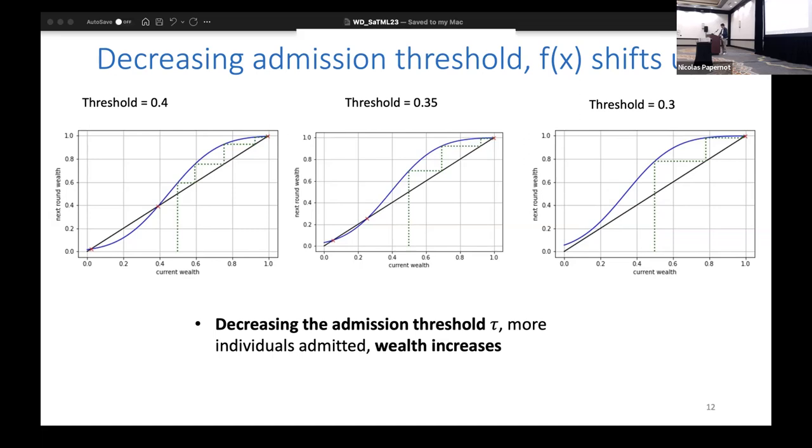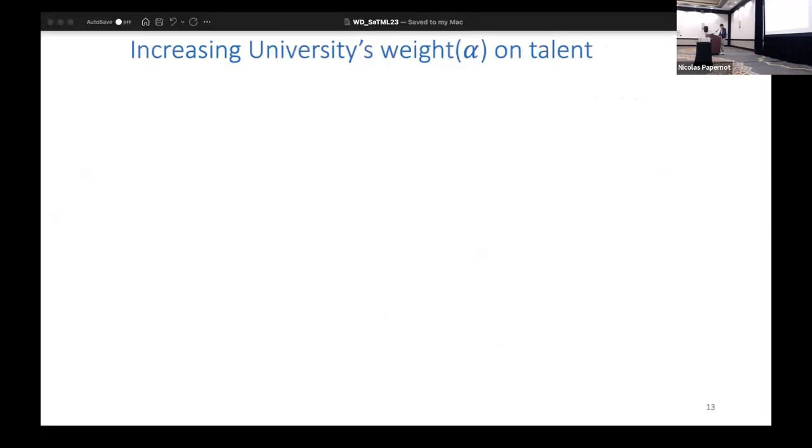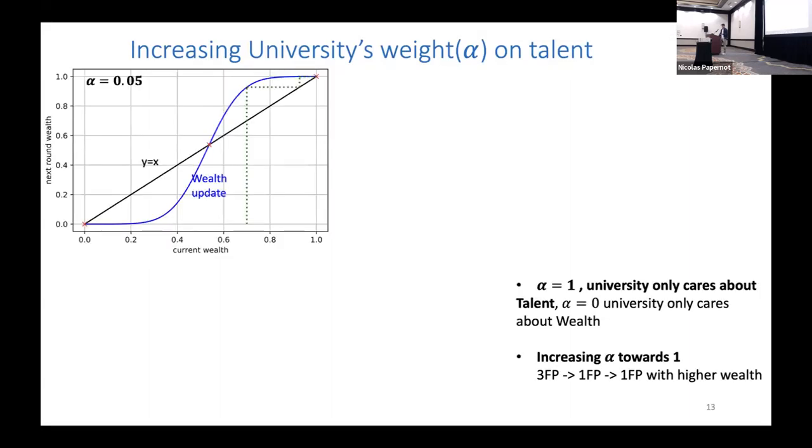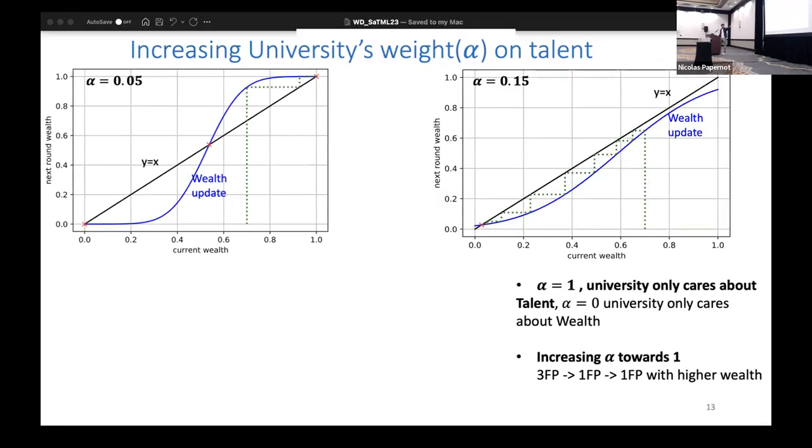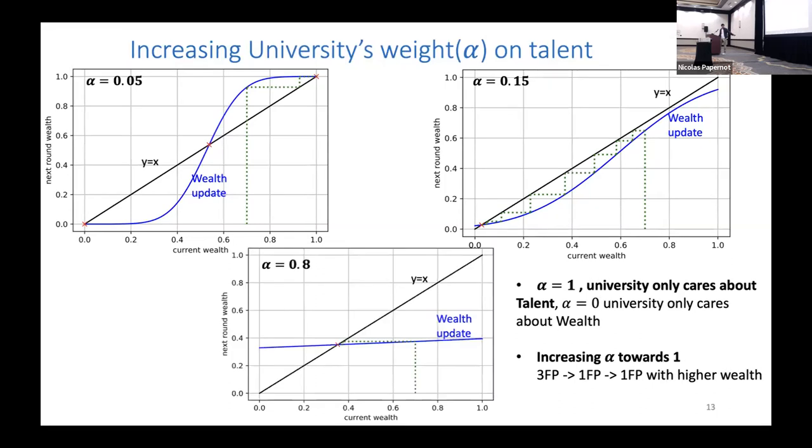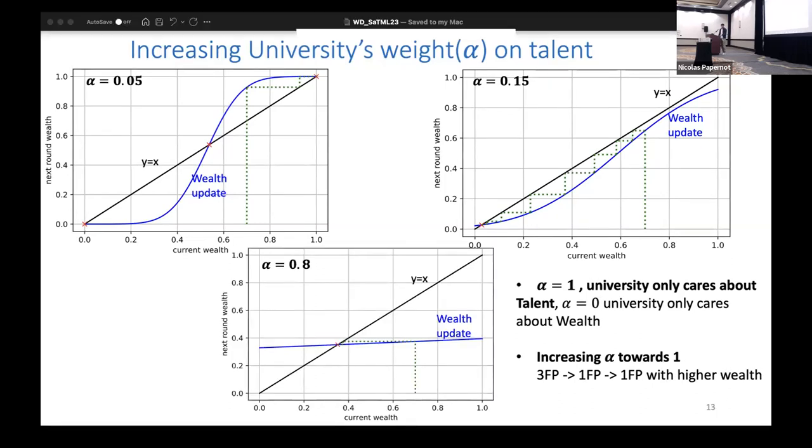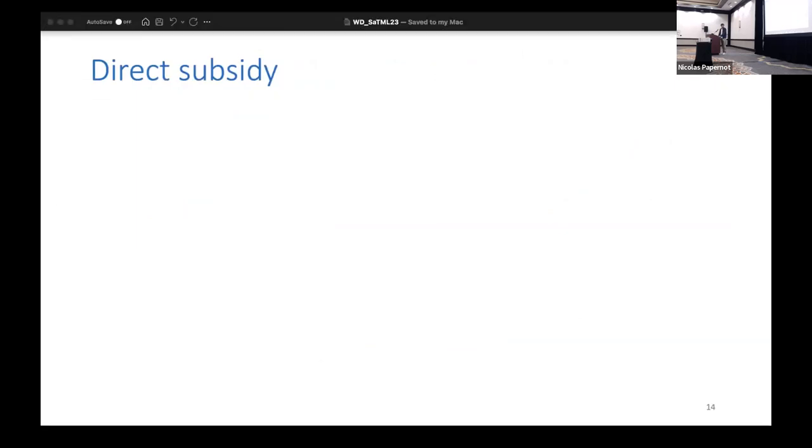Similarly, if you increase α - if you care more as a university about talent - then you can see that you go from a regime of three fixed points slowly to one low value fixed point. Then as you increase α even more, you end up with a higher wealth fixed point, and you're decreasing disparity.